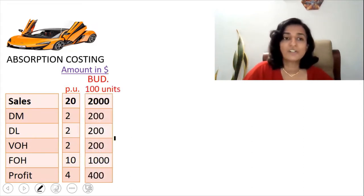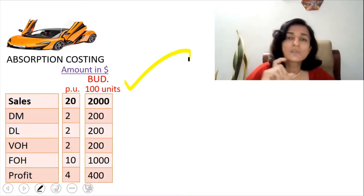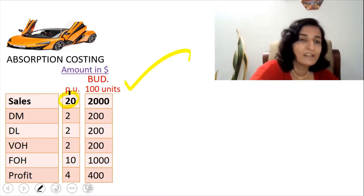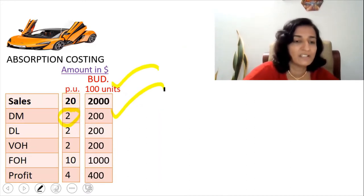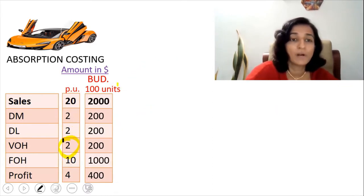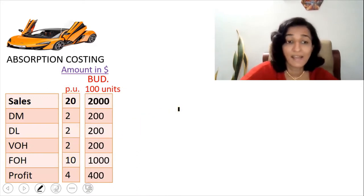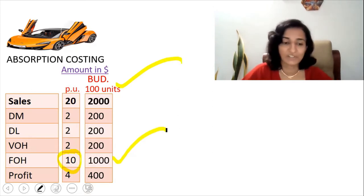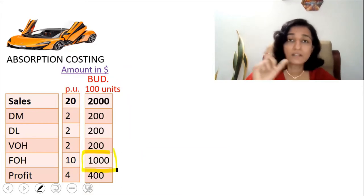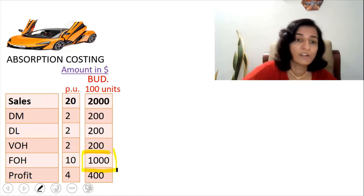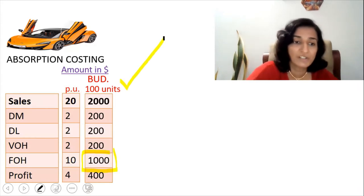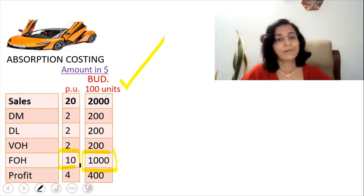The budgeted units is 100 units. So the budgeted figures will be: $20 × 100 for sales value, $2 × 100 for direct material cost, $2 × 100 for direct labor cost, $2 × 100 for variable overhead cost, and $10 × 100 for fixed overhead budgeted. Please note that $1,000 is the total fixed overhead budgeted, and they have converted it to a per-unit figure by dividing by the number of budgeted units — that is how they got $10 per unit.